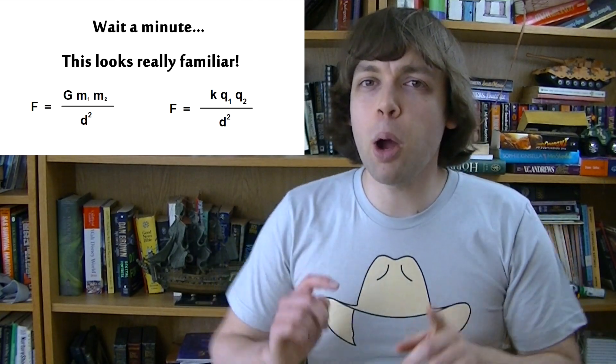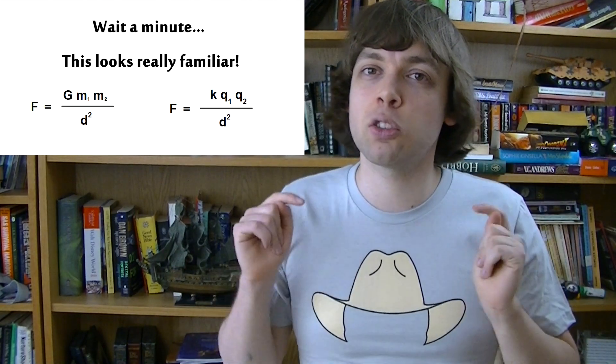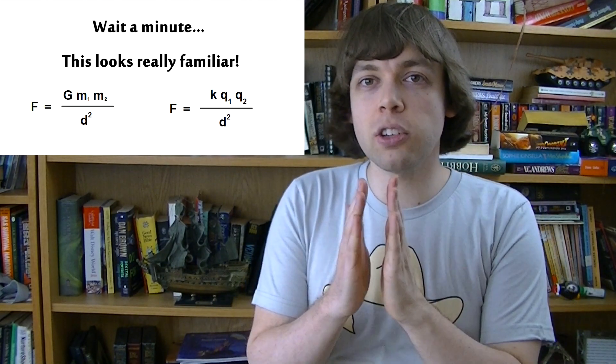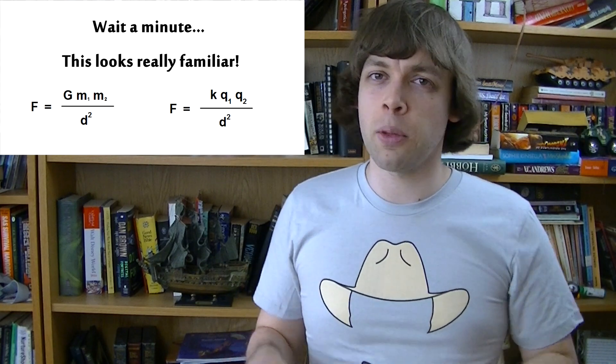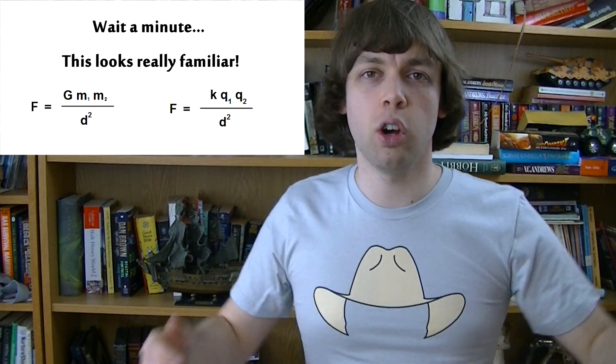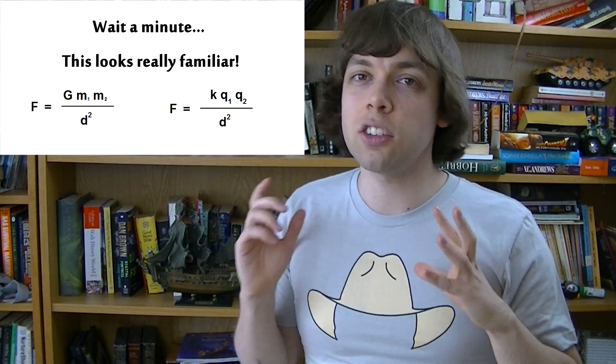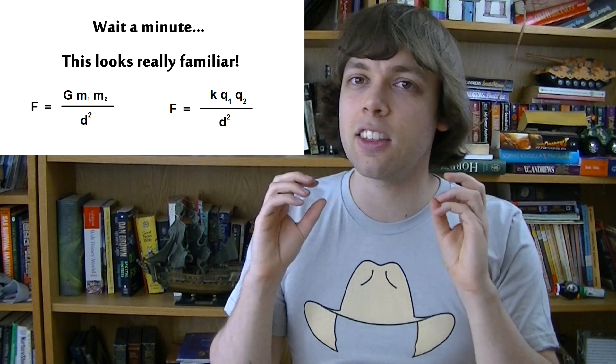Wait a minute, does this look familiar to you? It should. This equation is strangely similar to Newton's universal law of gravitation. Both of these laws are inverse square laws. That means that if you double the distance between the two things, whether masses or charges, you reduce the force to a quarter of what it was. Or if you halve the distance between them, you quadruple the force between them. So when it comes to distance, charges and masses work in exactly the same way.